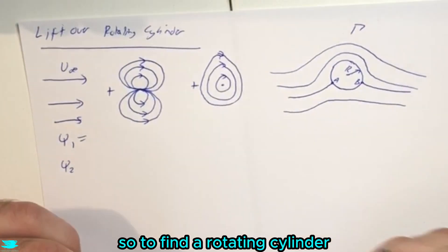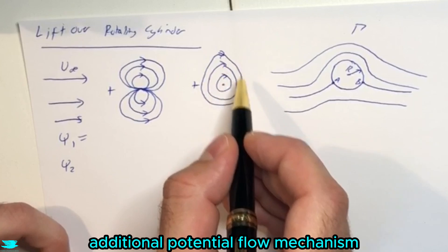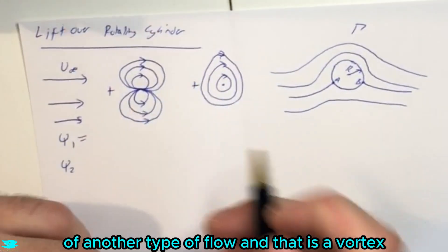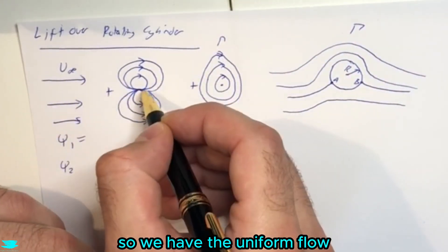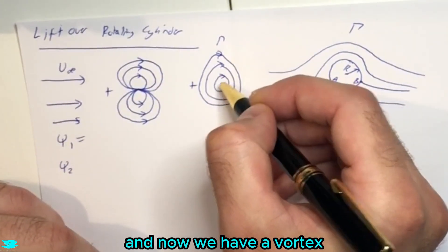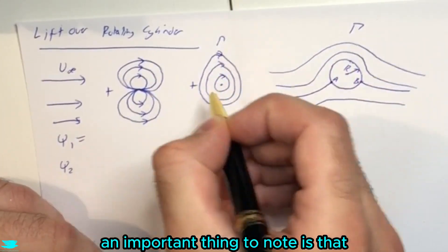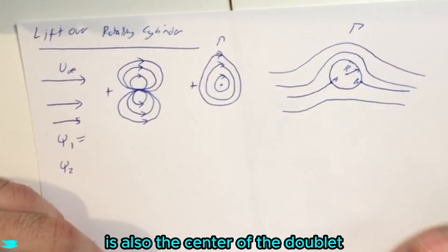So to find a rotating cylinder, the flow over it and the lift over it, we need to add an additional potential flow mechanism, another type of flow, and that is a vortex. So we have the uniform flow, we have the doublet, and now we have a vortex superimposed on both of those with a strength of gamma. The important thing to note is that the center of the vortex is also the center of the doublet.